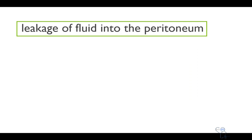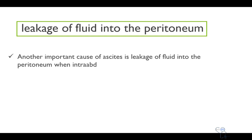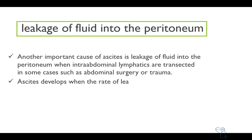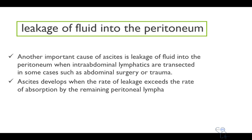Another cause of ascites is leakage of fluid into the peritoneum. This leakage occurs when an intra-abdominal lymphatic is transected, as in cases of abdominal surgery or trauma. Ascites develops when the rate of leakage exceeds the rate of absorption by the remaining peritoneal lymphatics.